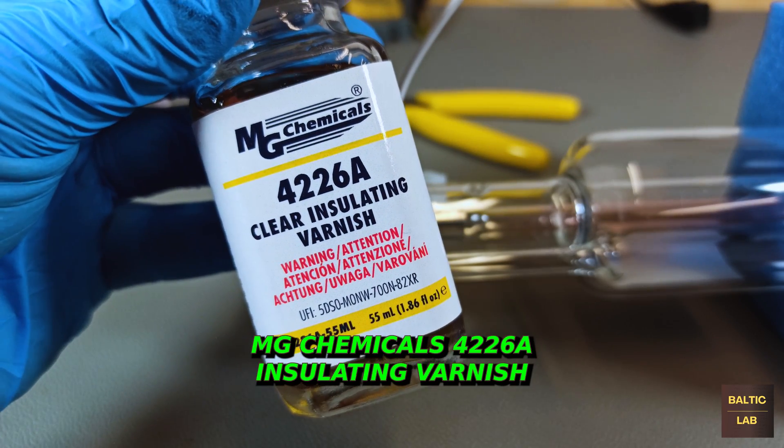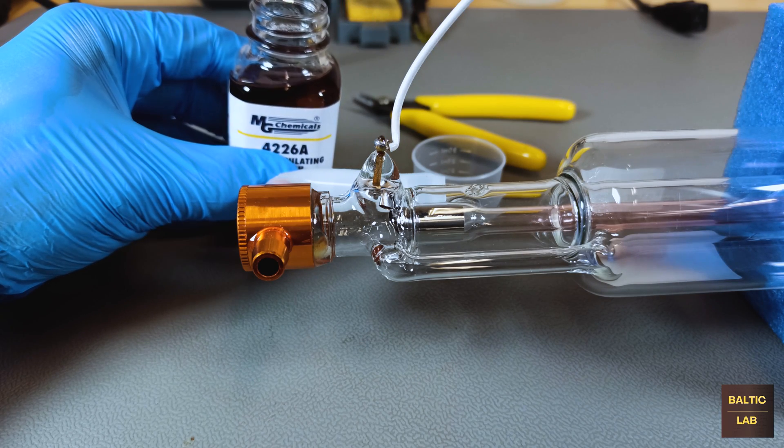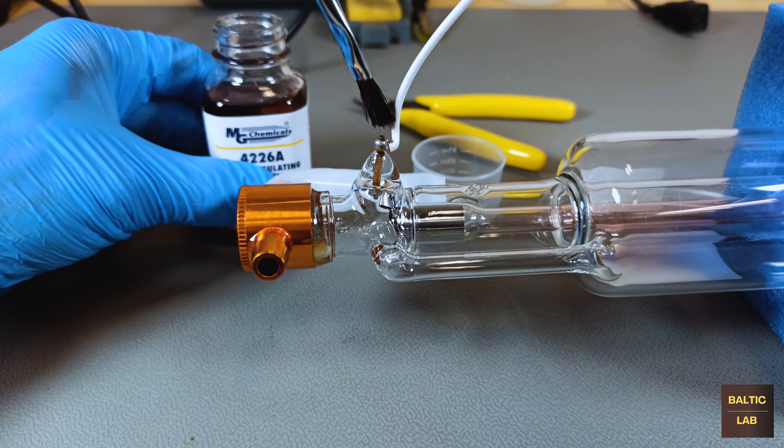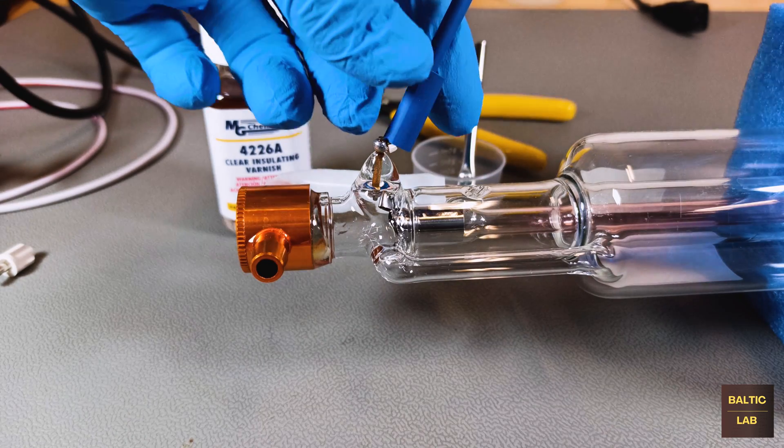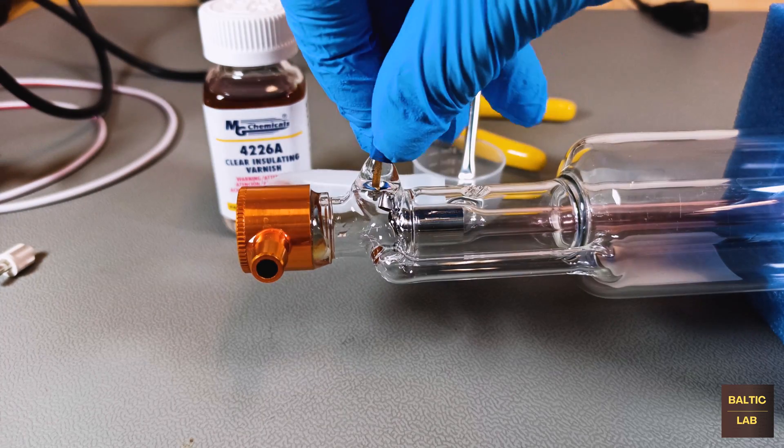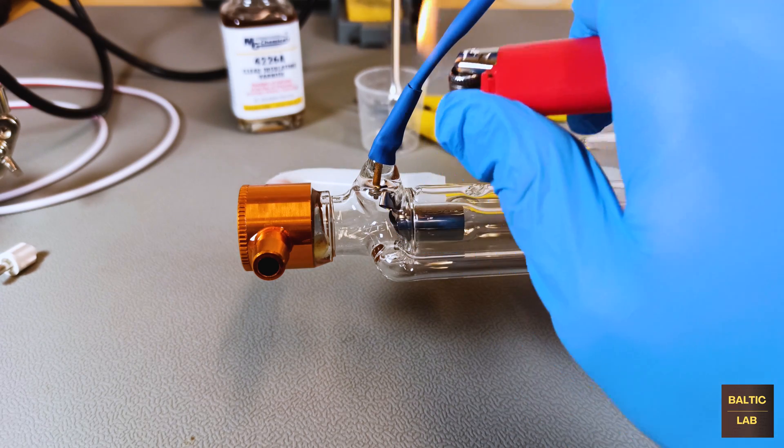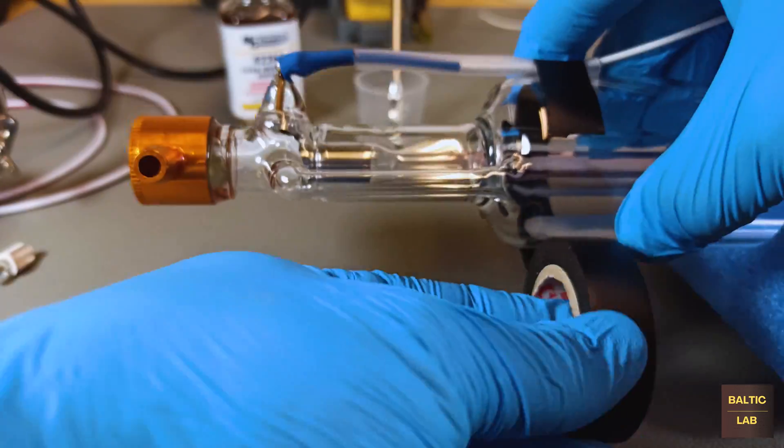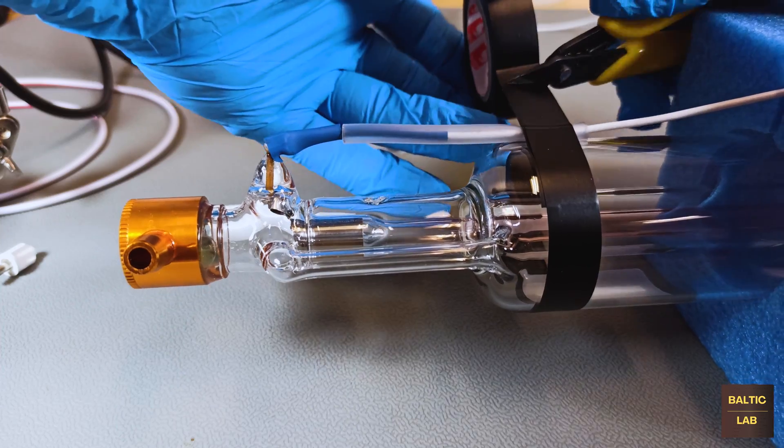I then used some MG Chemicals 4226A insulating varnish on the exposed copper. Since the cathode is at ground potential during operations this is technically not necessary but it certainly doesn't hurt either. For added mechanical stability, which is probably also complete overkill on the cathode side, I added some heat shrink tubing as well as a short bit of aquarium PVC tubing and quite a bit of electrical tape to fix everything in place.